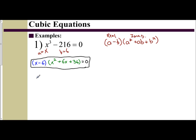So let's go ahead and solve. The first parenthesis, x minus 6, set it equal to 0: x minus 6 equals 0, so x is 6. That's easy to solve for the real.